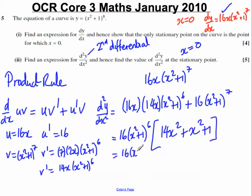OK. Tidied up, we would get 16(x² + 1)⁶(15x² + 1). That is our second differential.